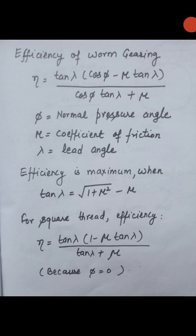Hello students. Today we will study the efficiency of a worm gear system. We know that the efficiency of a worm gear system is low. The reason behind it is that a lot of heat is produced due to friction while sliding. The worm and the gear are made of dissimilar metals in order to minimize friction and loss in efficiency.